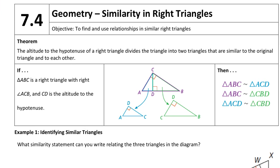So the theorem is a little wordy, but it says the altitude to the hypotenuse of a right triangle divides the triangle into two triangles that are similar to the original triangle and to each other.